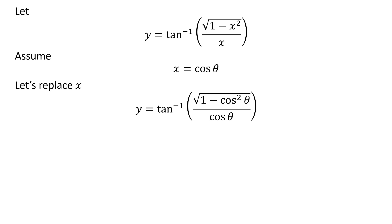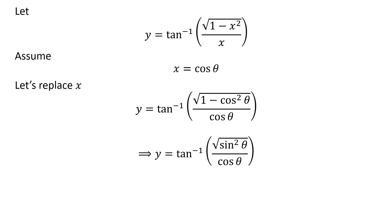Replacing x by our assumed value in y gives us y is equal to inverse of tangent of square root of 1 minus square of cosine of theta upon cosine of theta. We know 1 minus square of cosine of theta is equal to square of sine of theta, so y is equal to inverse of tangent of square root of square of sine of theta upon cosine of theta.